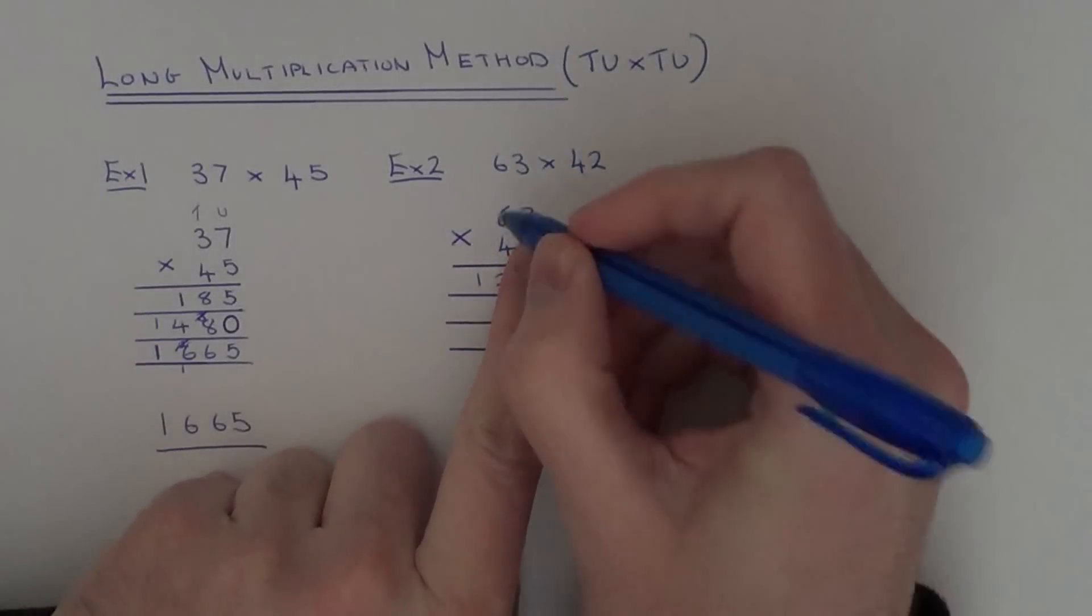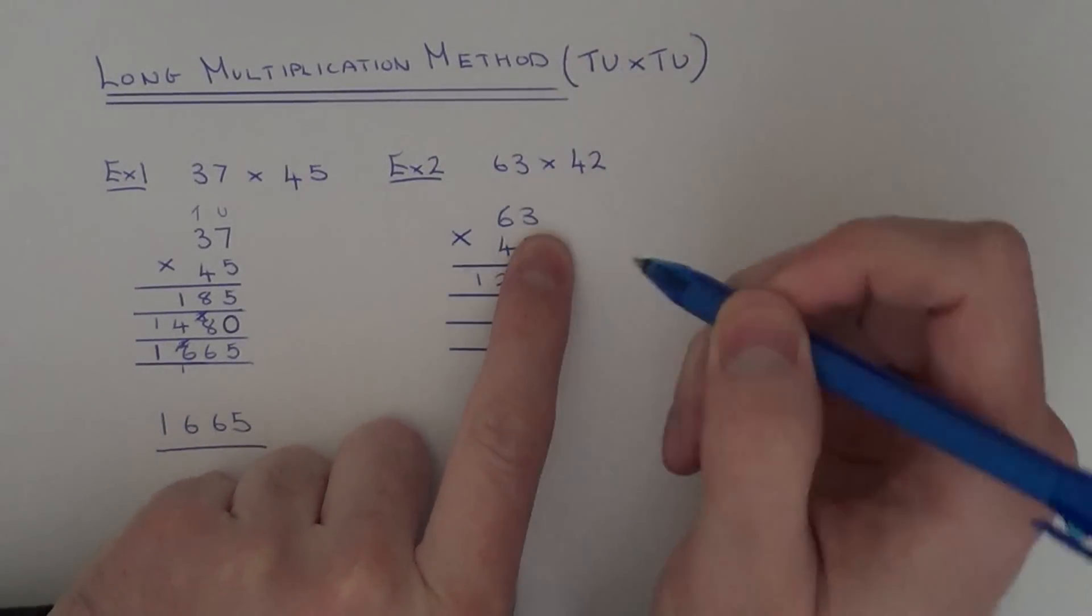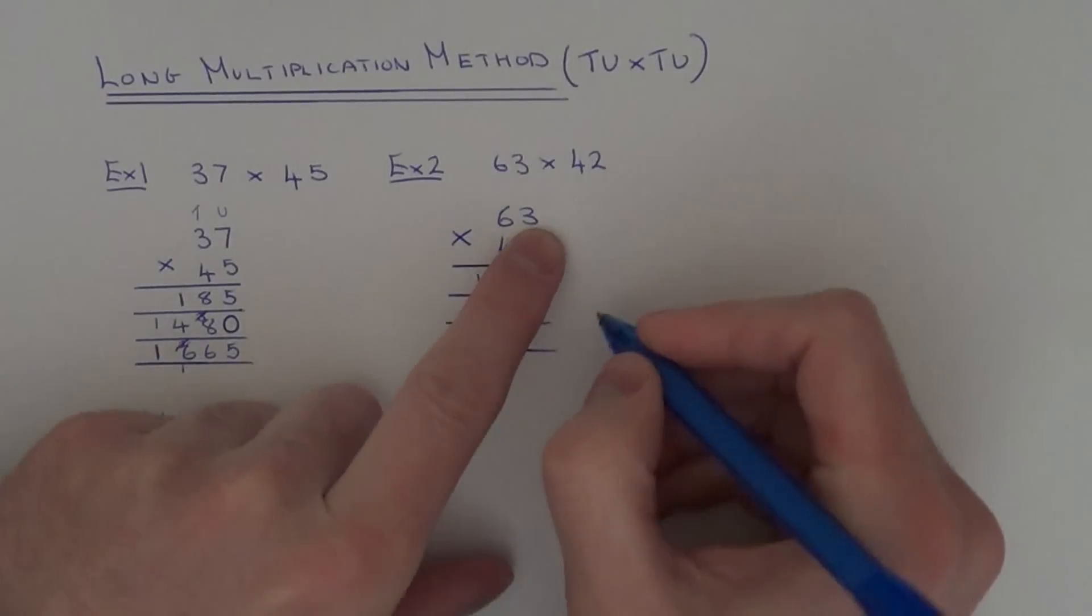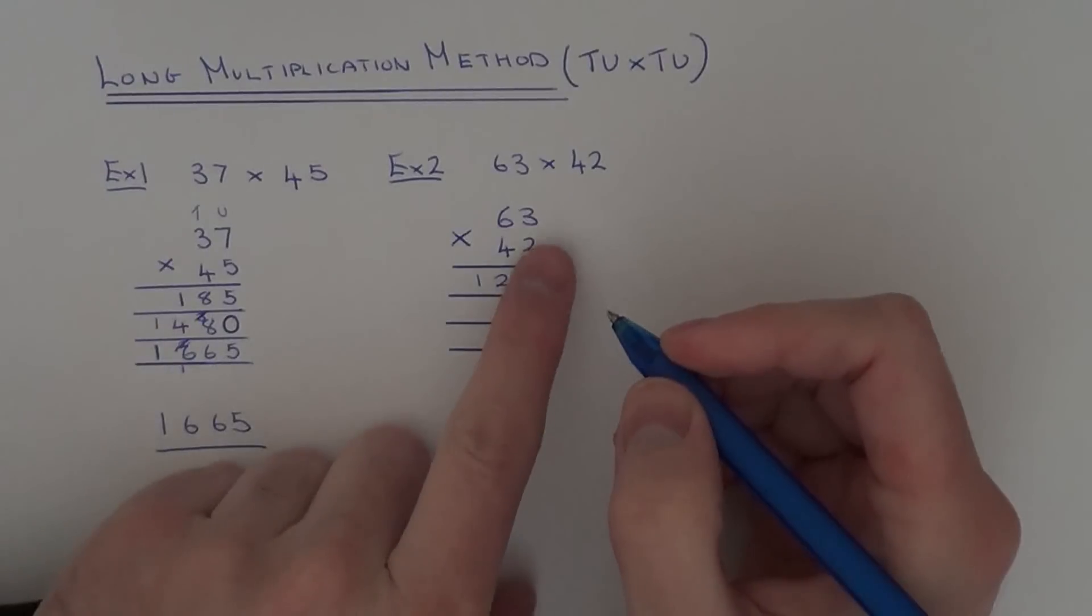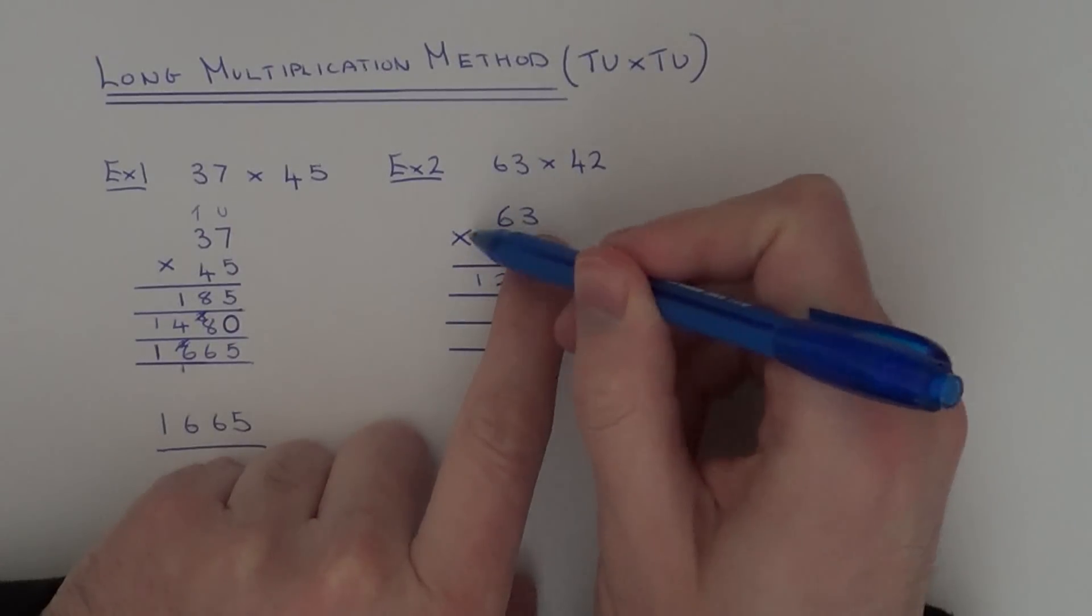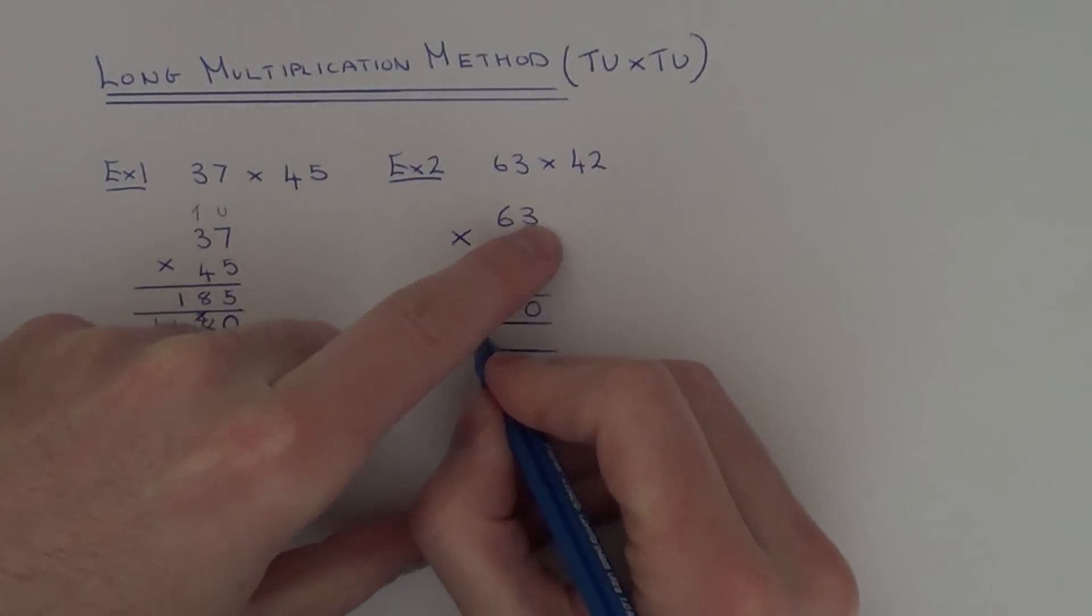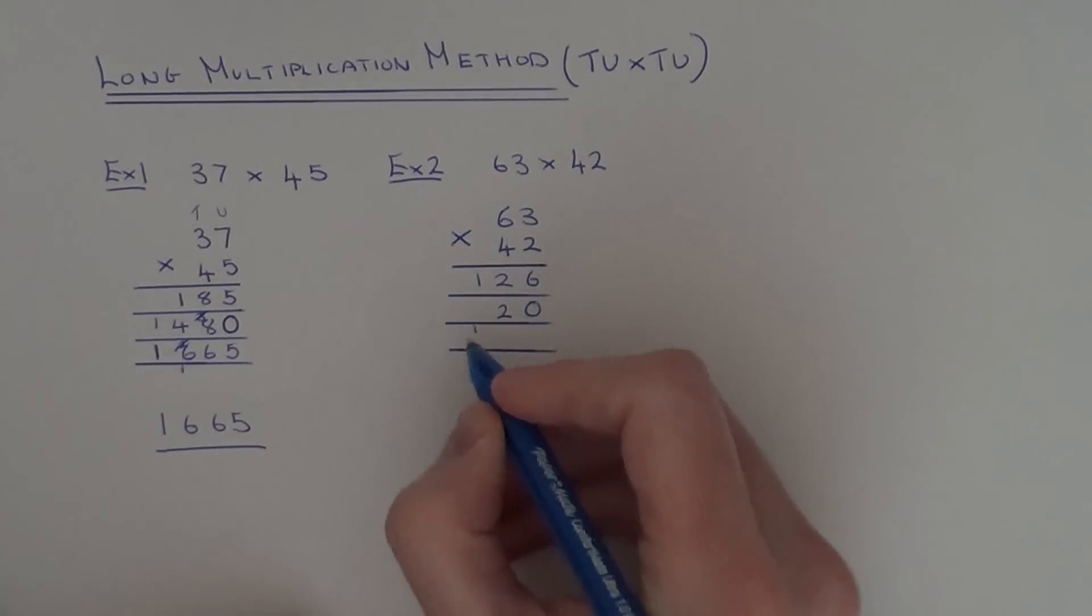Right, on the next line we've got to do 63 times 4. But remember, that's 63 times 40. So what we need to do is just put a 0 at the start of that second line. So next, do 3 times 4, which is 12. And then you've got to do 6 times 4, which is 24, plus the 1, which is 25.